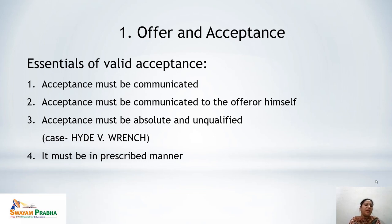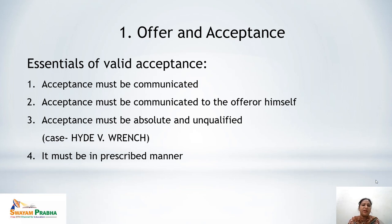This is illustrated by Hyde versus Wrench. The defendant offered to sell his farmhouse for pound 1,000. The plaintiff wanted to pay only pound 950, and later agreed to pay pound 1,000. The defendant then refused to sell. The court decided that the acceptance was not absolute and unqualified — the original offer had already been revoked by the counter offer — so the suit could not be maintained. Acceptance must be without conditions, reservations, or any variation in the offeror's terms.